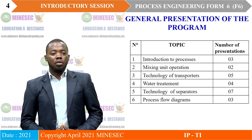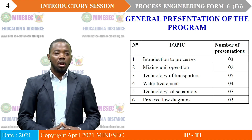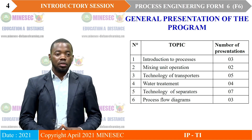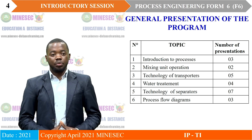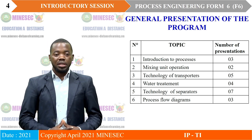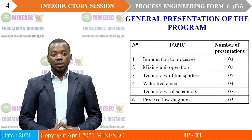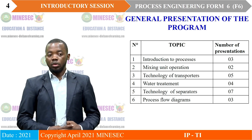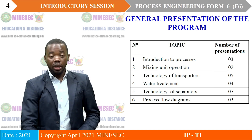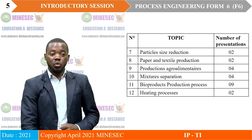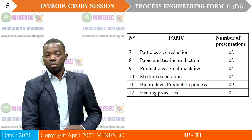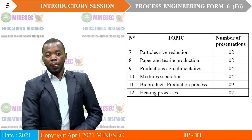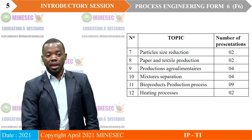The Process Engineering course for Form 6 students is made up of twelve topics, presented as follows: the first topic will have three presentations; mixing and winding operations will have two; technology of transporters, five; water treatment, four; technology of separators, seven; process flow diagrams, three; particle size reduction, two; paper and textile production, two; production of agro-food; mixtures and separation; bio-product production; and heating processes.